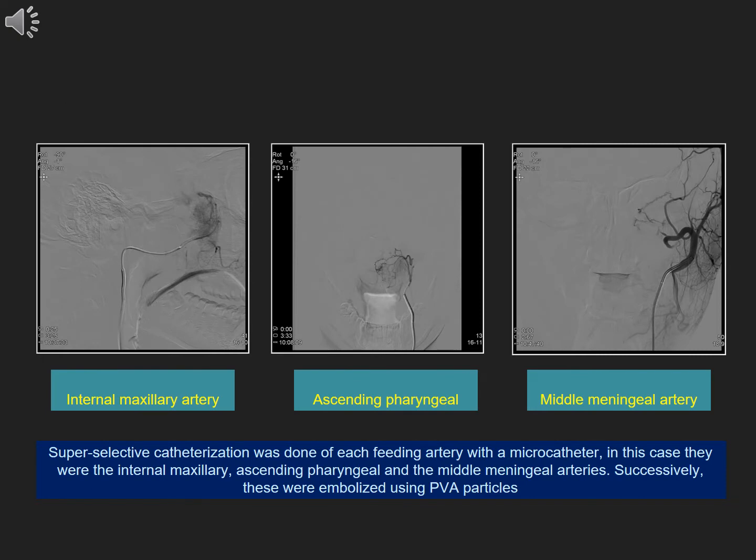Superselective catheterization was done of each feeding artery with a microcatheter. In this case, they were the internal maxillary, ascending pharyngeal, and the middle meningeal arteries. Successively, these were embolized using PVA particles.